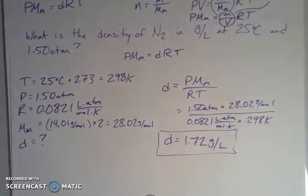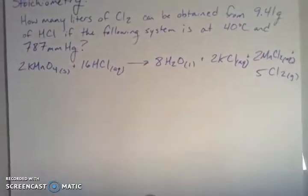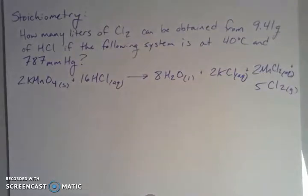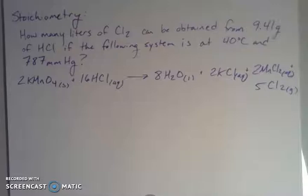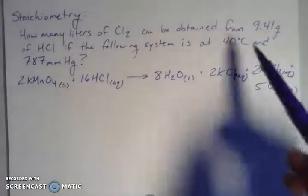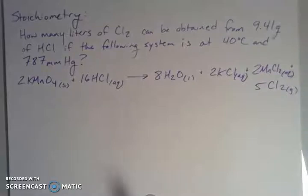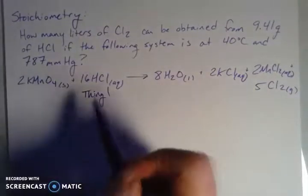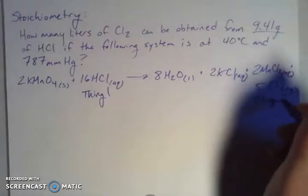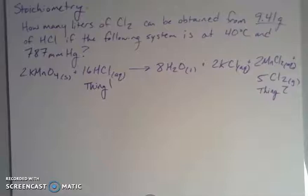That's another way to rearrange PV = nRT. If we know the identity of our gas, we can take its molar mass into account and find its density. Now the last application is using stoichiometry with the ideal gas law. We're given a balanced chemical equation and asked for liters of chlorine gas, with information given about hydrochloric acid. I'll use stoichiometry to find the moles of Cl₂, which becomes my n value for PV = nRT.